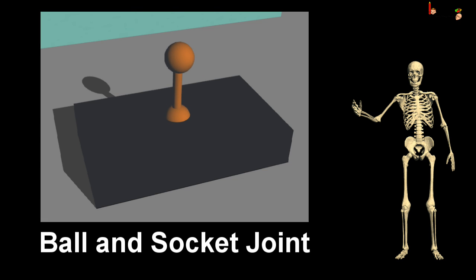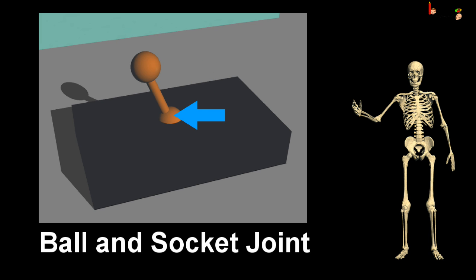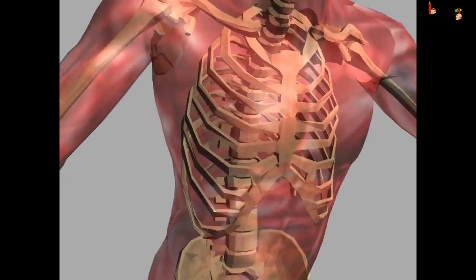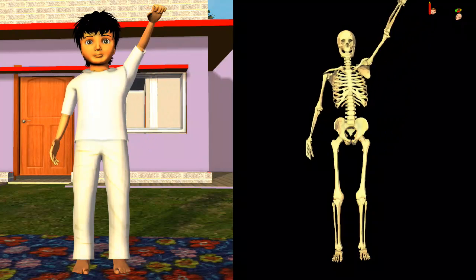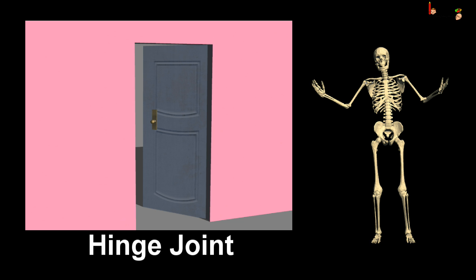Let us see the ball and socket joint. It allows the maximum movement. The round end of one bone fits into the hollow part of another bone — hence the name ball and socket joint. Hip joints and shoulder joints are some of the ball and socket joints in our body.